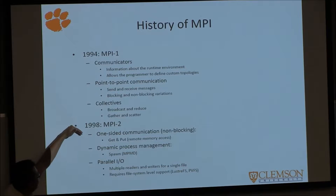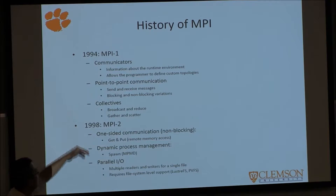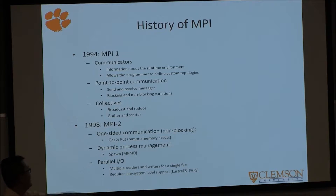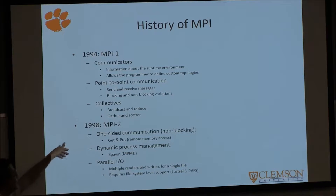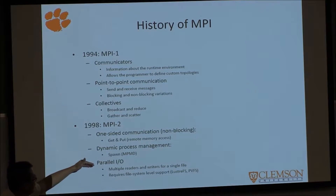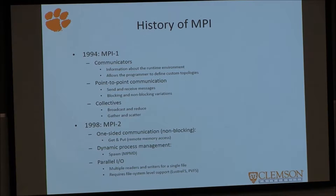By 1998, the second version of the MPI standard came out. They introduced one-sided communications, where one process can modify things within the memory of another process. They added dynamic process management, so you can create more processes while doing work. And they added parallel input/output — how to get multiple processes to read and write from the same data file.